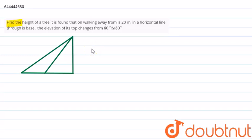Hello everyone. The question for today is: we need to find the height of a tree. On walking away from it 20 meters in a horizontal line through its base, the elevation of its top changes from 60 degrees to 30 degrees. Therefore, let us denote this by a diagram.